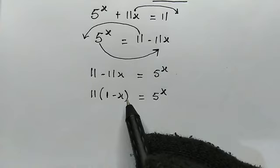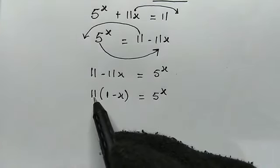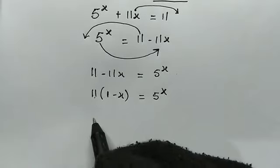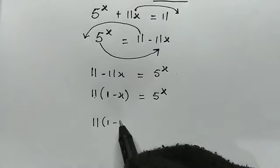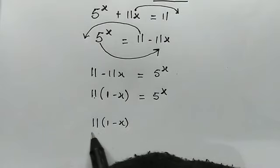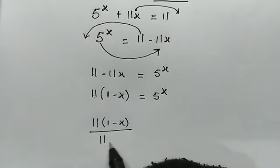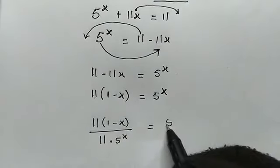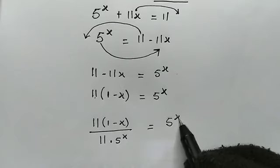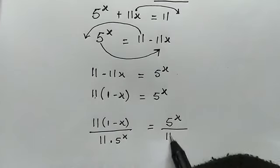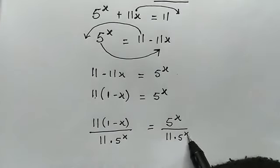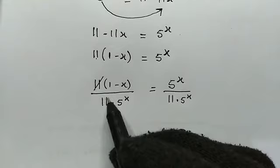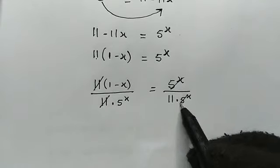Now let's go ahead and divide both sides by 11 times 5 to the power of x. So here we have 11 times bracket 1 minus x, divided by 11 times 5 to the power of x, equal to 5 to the power of x divided by 11 times 5 to the power of x. We can see we have some nice cancellations here — this cancels this, and this cancels this.